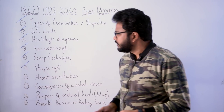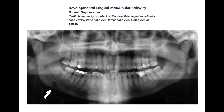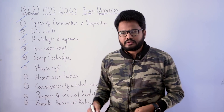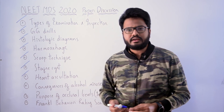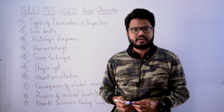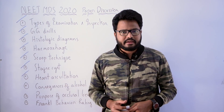Next: Staphne cyst. It is also known by several names — static bone cyst, lingual mandibular bone cyst, latent bone cyst, or Staphne defect. This is how it appears in an OPG.